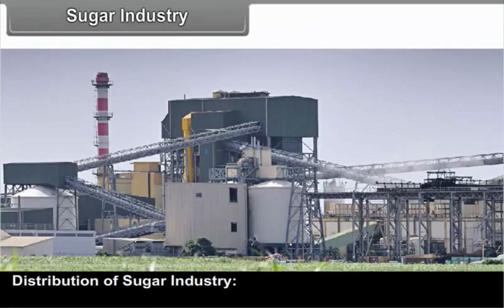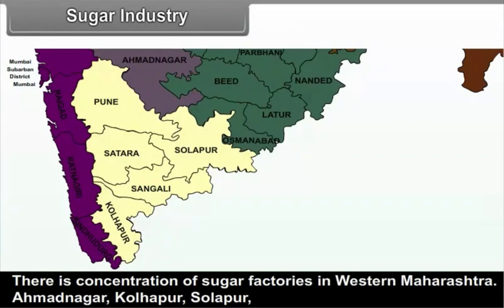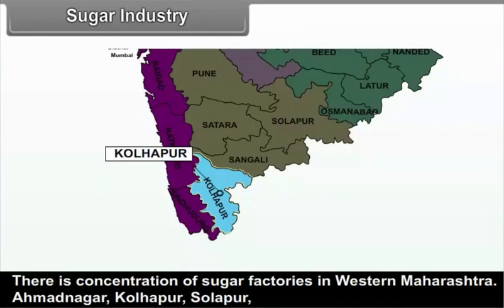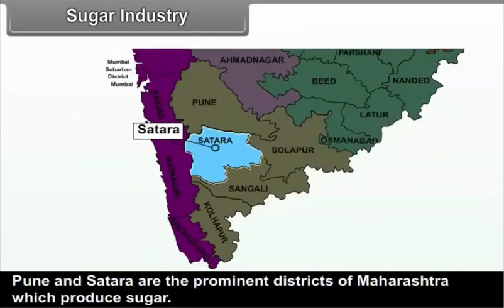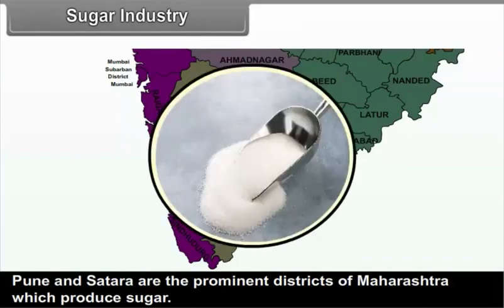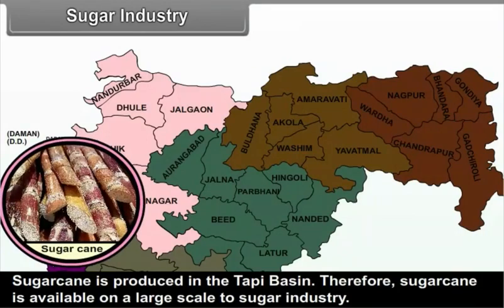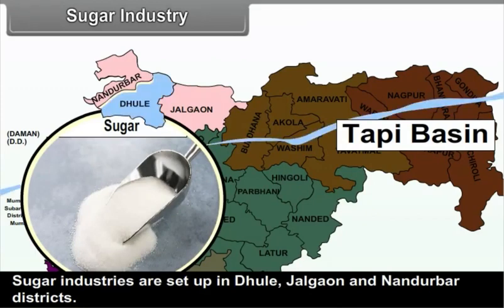Distribution of Sugar Industry. Pune Division: There is a concentration of sugar factories in Western Maharashtra. Ahmednagar, Kolhapur, Solapur, Pune and Sangli are the prominent districts which produce sugar. Nashik Division: Sugarcane is produced in the Tapi Basin, so sugarcane is available on a large scale. Sugar industries are set up in Dhule, Jalgaon and Nandurbar districts.